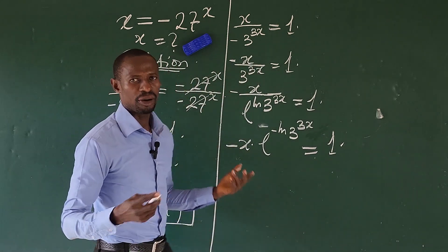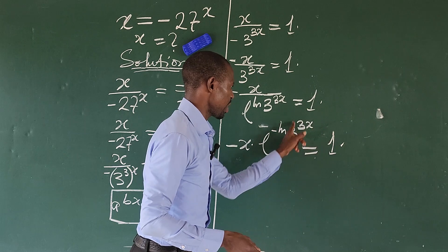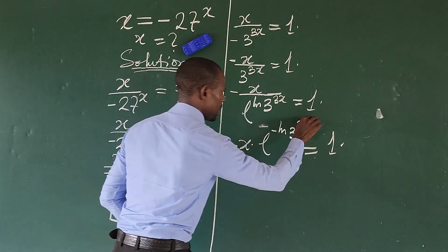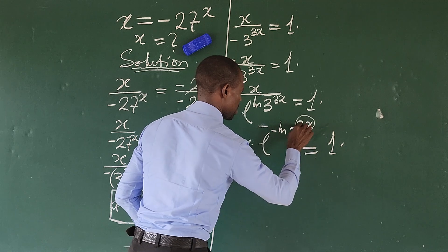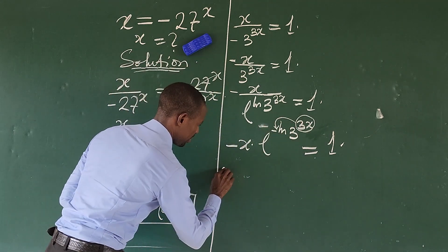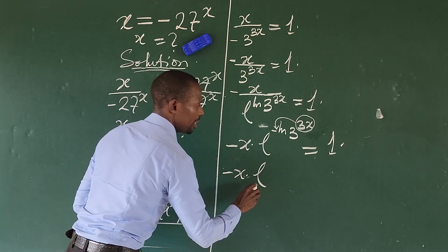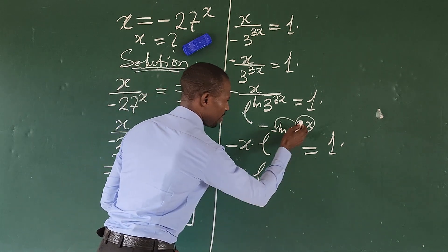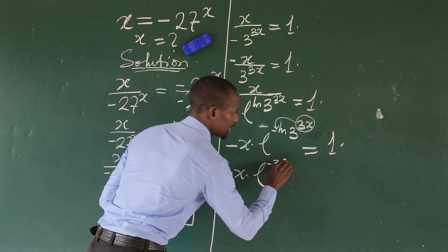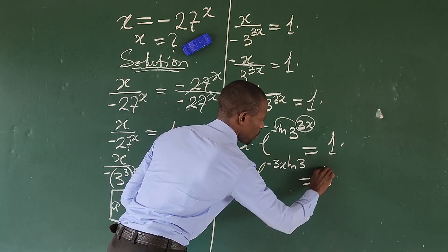According to the law we applied earlier, we can move that exponential expression back, giving us minus x times e to the power of minus 3x·ln(3) equals 1.